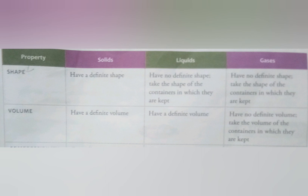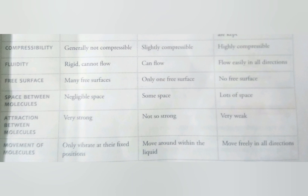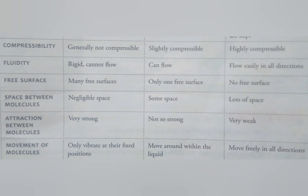The next property is fluidity. Solids are rigid and cannot flow because their molecules are closely packed. Liquids can flow because they are free to move around and slip, slide and glide over one another. Gases flow easily in all directions because the molecules of gases move freely in all directions in a closed container.